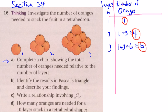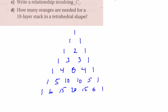Okay, that's part A. Part B says: identify the results in Pascal's triangle and describe your findings. I've produced a crude Pascal's triangle, and we can see the numbers one, four, ten, which show up in this diagonal. And it sort of suggests that the next tetrahedron would have twenty.